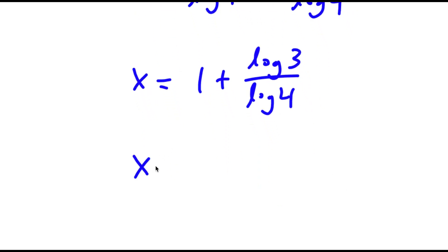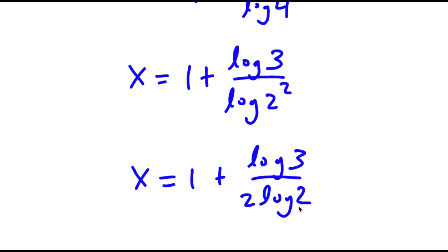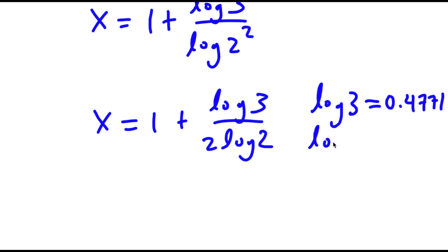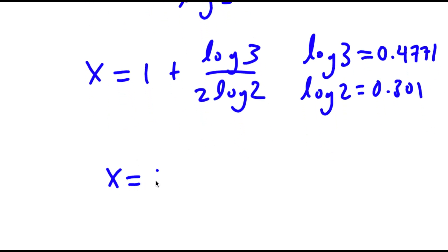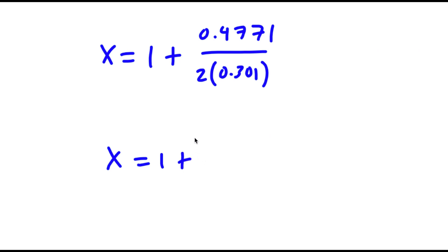Now log 4 equals log 2 squared, so I have x is equal to 1 plus log 3 over log 2 squared. And log 2 squared is the same as 2 times log 2. Log 3 is equal to 0.4771 and log 2 is equal to 0.301. So now I have x is equal to 1 plus 0.4771 over 2 times 0.301, which equals 1 plus 0.7925, which is equal to 1.7925.